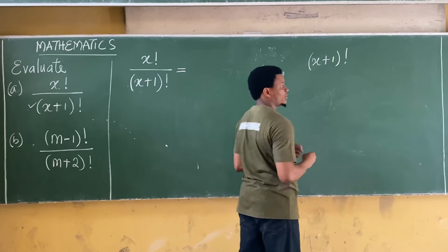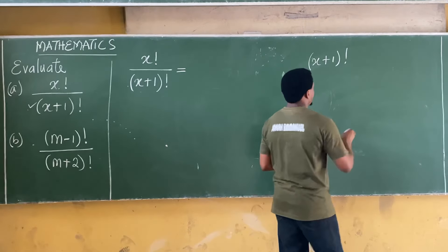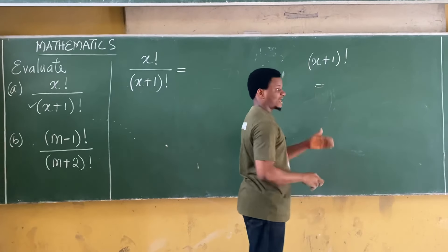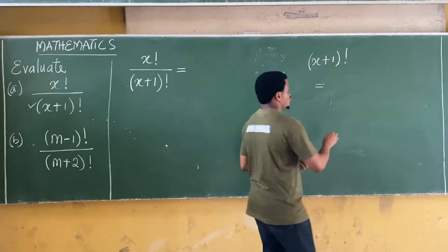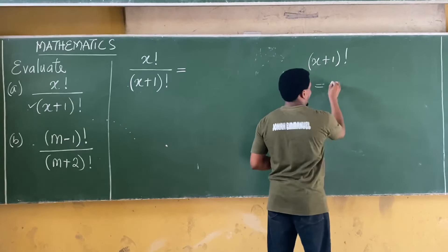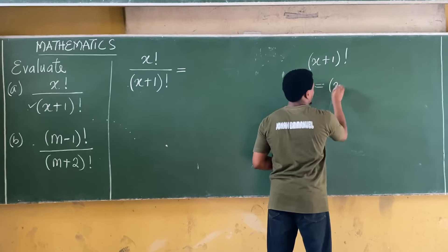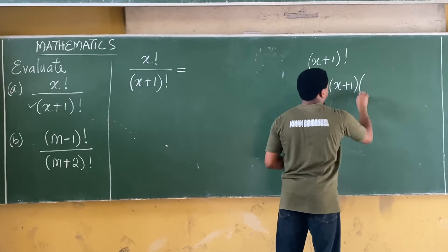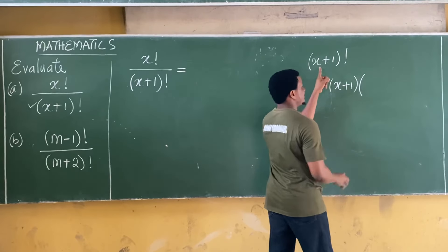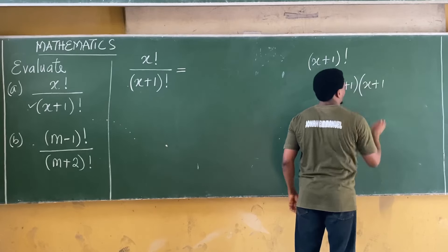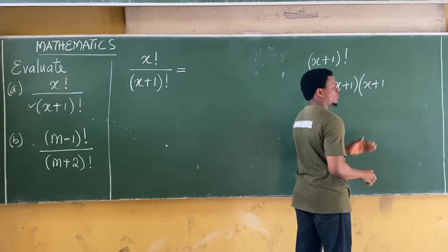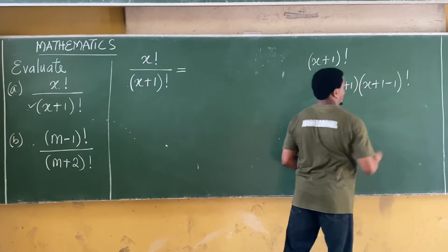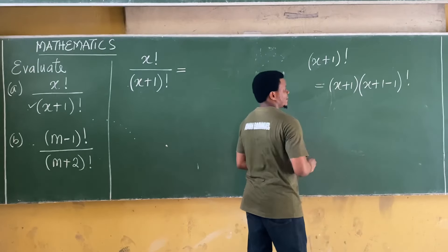For factorials, each successive term subtracts 1. So (x+1)! = (x+1) × [(x+1) − 1]! = (x+1) × x!.